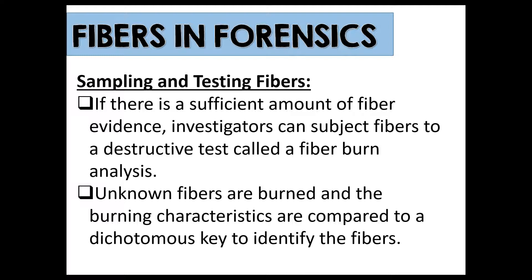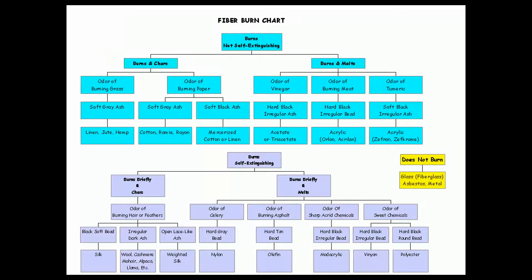If there is sufficient fiber evidence, investigators are going to subject these fibers to a destructive test called a fiber burn analysis. Basically, they burn fibers and figure out the way that they burn, using something called a dichotomous key to figure out what kind of fiber they are working with. Investigators can follow this dichotomous key all the way down to the identity of the fiber — whether it's polyester, acrylic, acetate, cotton, hemp, silk, or nylon.